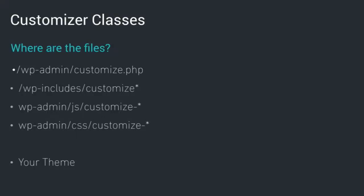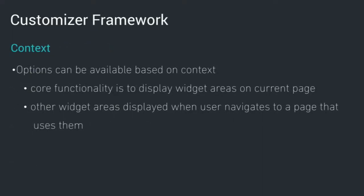I've got a couple of slides about how to develop using the customizer. There are several locations in WordPress where you have customizer files: WP admin and WP includes, in the base of WordPress. There's also a way to add files into your theme via functions.php or include files, so you can break out the code and organize it. The customizer also does context — it knows what page you're on and displays data relative to that. For example, a widget area not displayed on the current page won't show an option in the customizer.